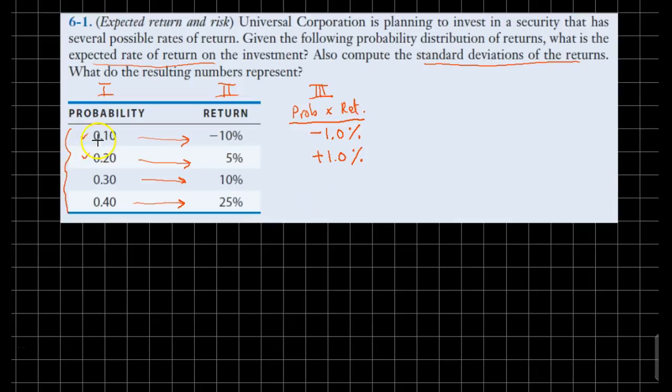The third scenario, so we are already done with the first two, now we are in the third one. 30% chance, we will get 10% return. You multiply these out, you get 3%.